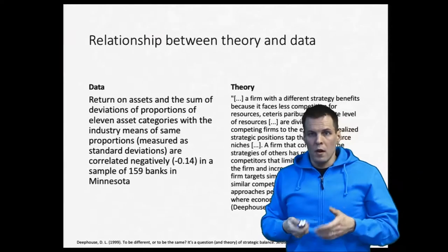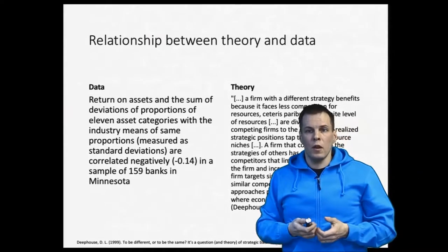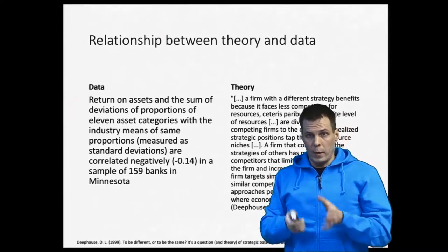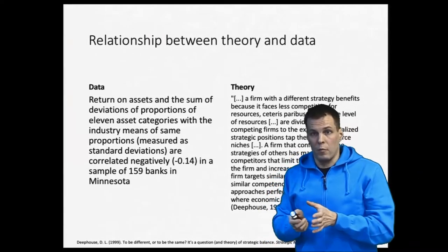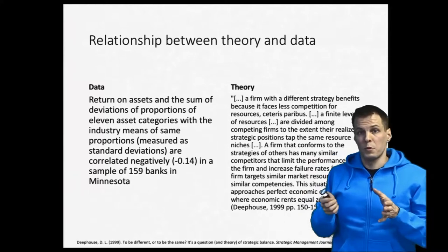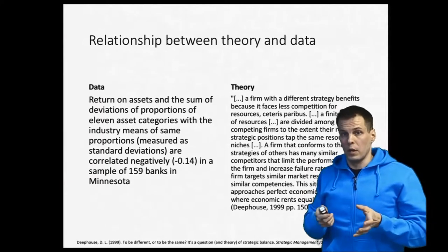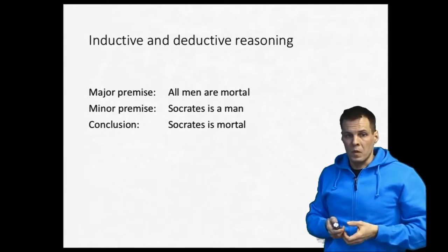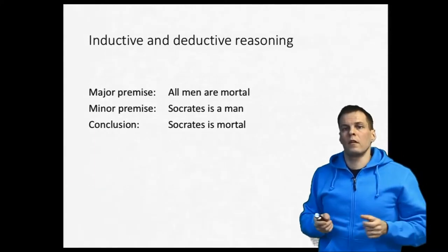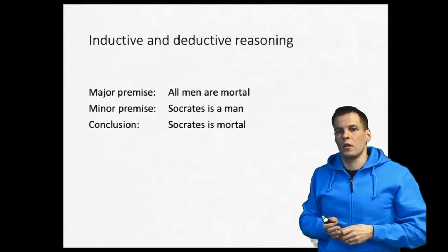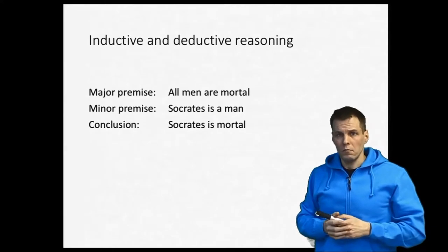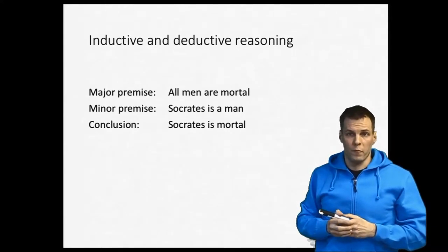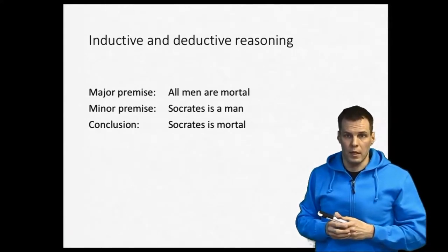To understand further the relationship between theory and data, we need to look at the types of reasoning that we use in science. Inductive and deductive reasoning are the two most common forms of reasoning in science.